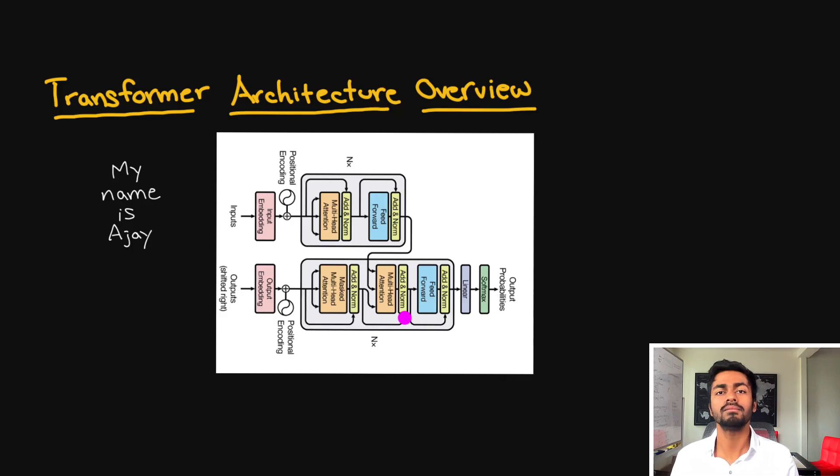Hello everyone and welcome to another episode of Code Emporium where we're going to talk about layer normalization. Now this here is the transformer neural network architecture that transforms one sequence into another sequence. It consists of two parts. We have an encoder and a decoder.